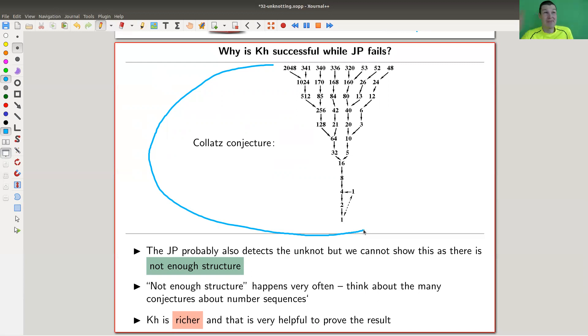The Jones conjecture is almost certainly true, but there's not enough structure to prove it. It's kind of too much combinatorics, too much basic combinatorics, and it gets out of hand. You don't have enough tools to prove it. That's exactly what happens for the Jones polynomial as well.